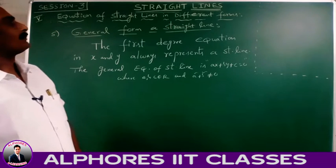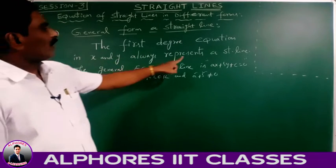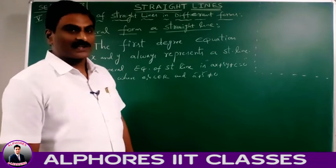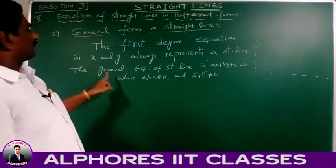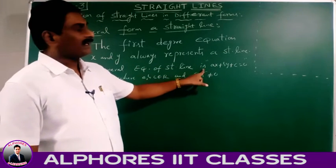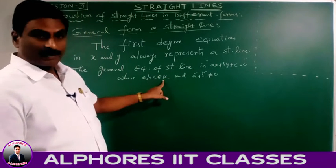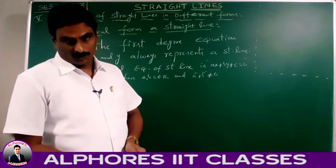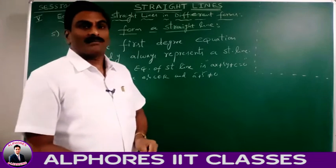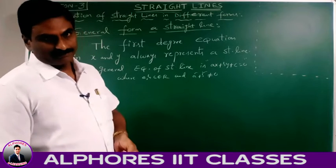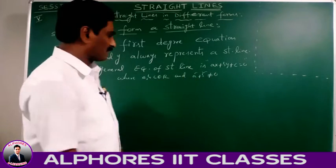The first degree equation in x and y always represents a straight line. The general equation of the straight line is ax + by + c = 0, where a, b, c belong to real numbers and a² + b² ≠ 0. Every first degree equation represents a straight line, and the general or standard equation of the straight line is ax + by + c = 0.